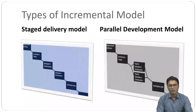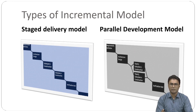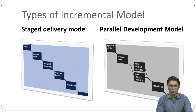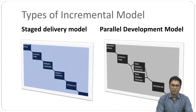In the next slide you can see the types of incremental model. There are two types of incremental models in the software development life cycle. The first one is the staged delivery model, in which just one section of the project is built at a time, allowing the product to be developed and delivered in stages, with each stage building on the previous one. The second one is the parallel delivery model, in which different subsystems are built concurrently, which can reduce the time required for development as long as there are enough resources available.